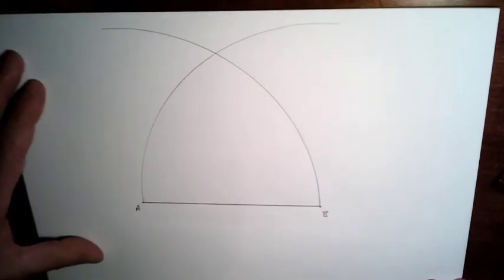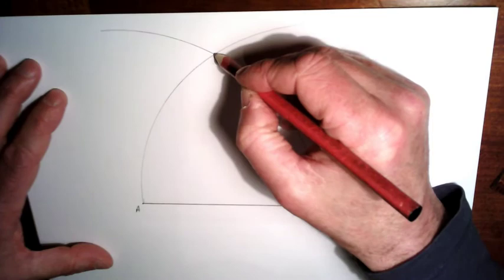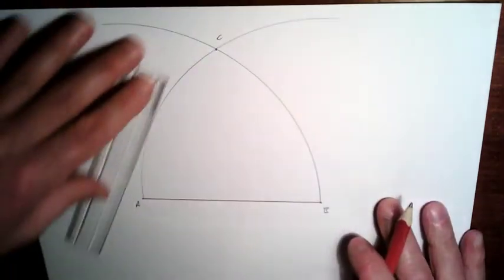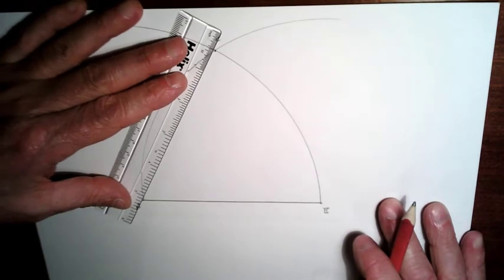So where the two arcs intersect, just mark a point there. Let's call it C, and connect C up to A.